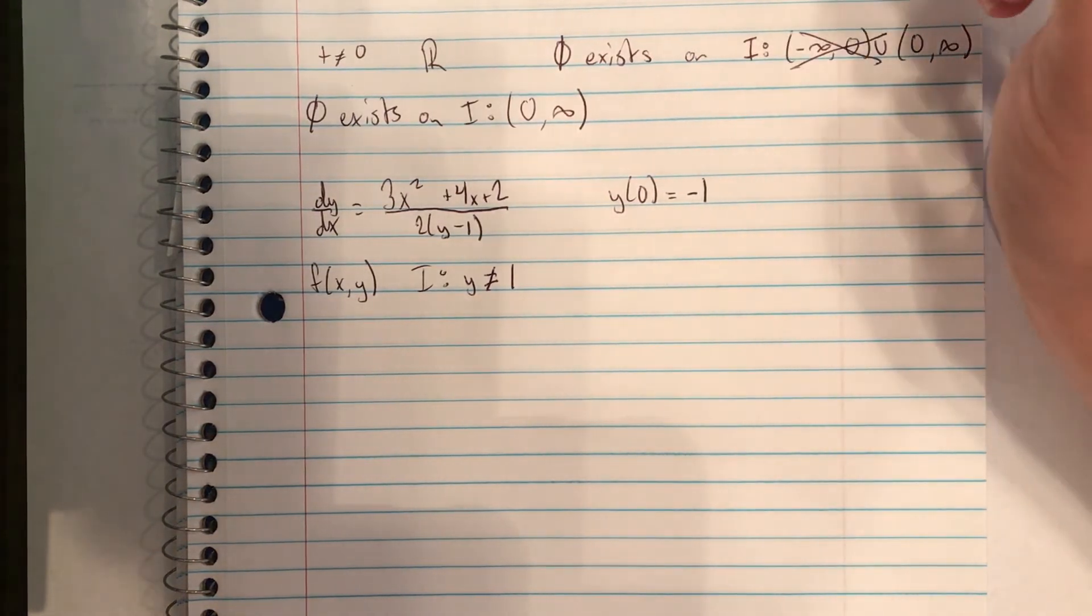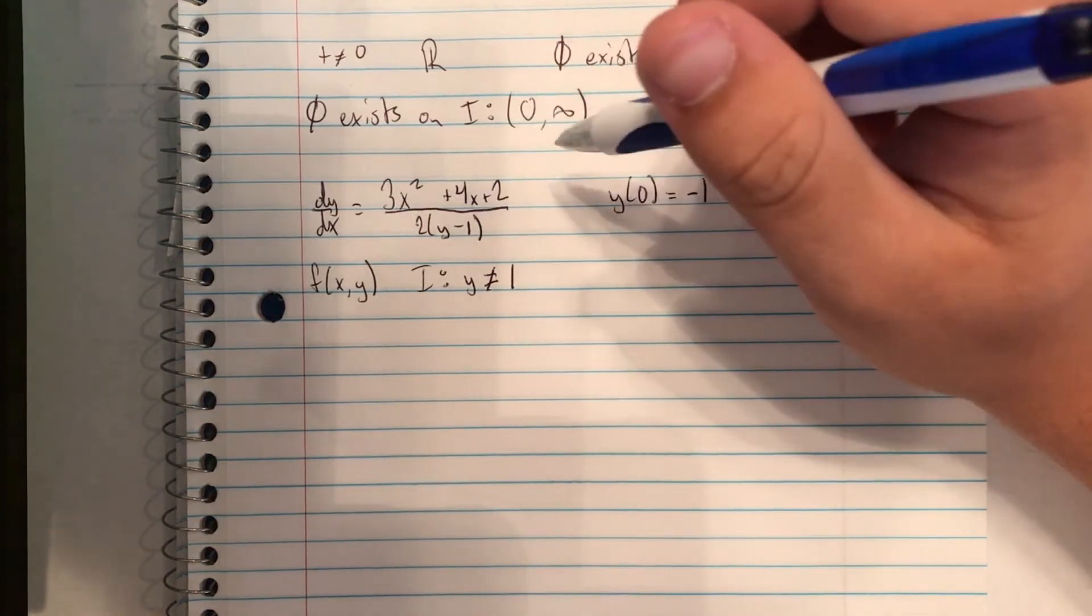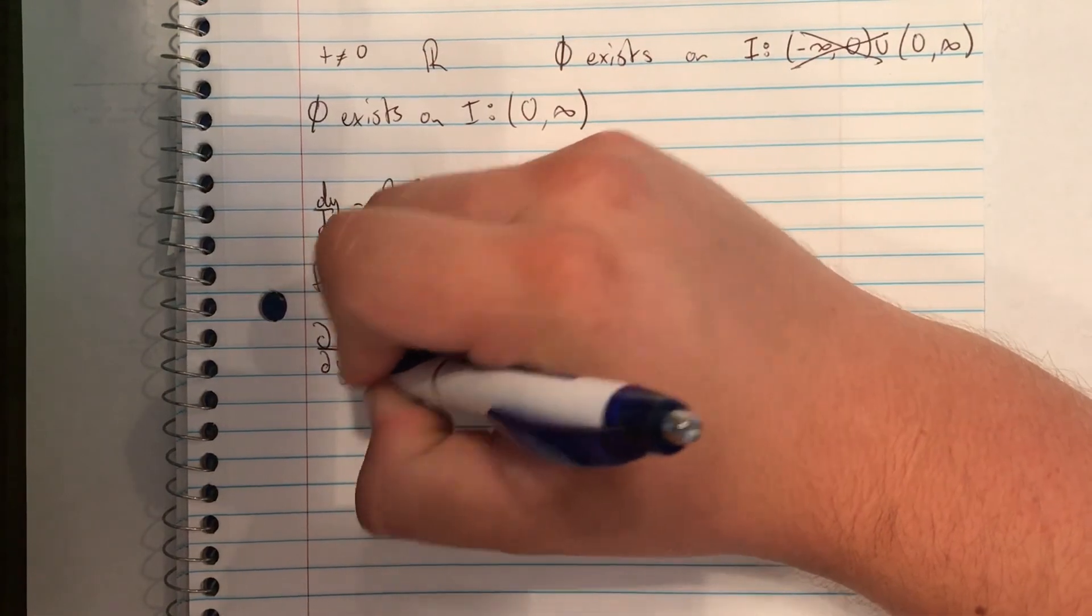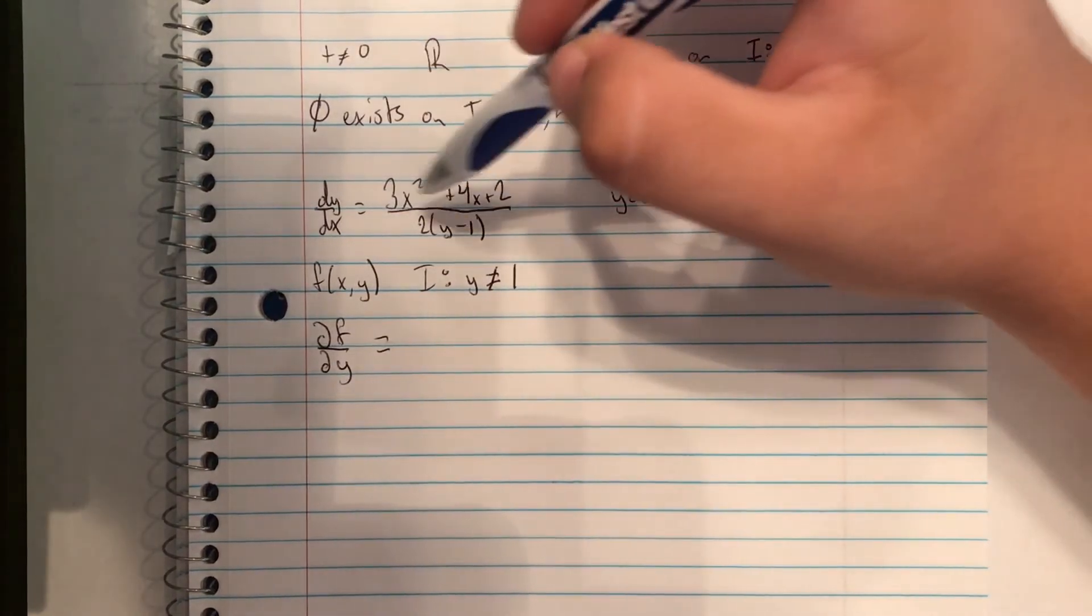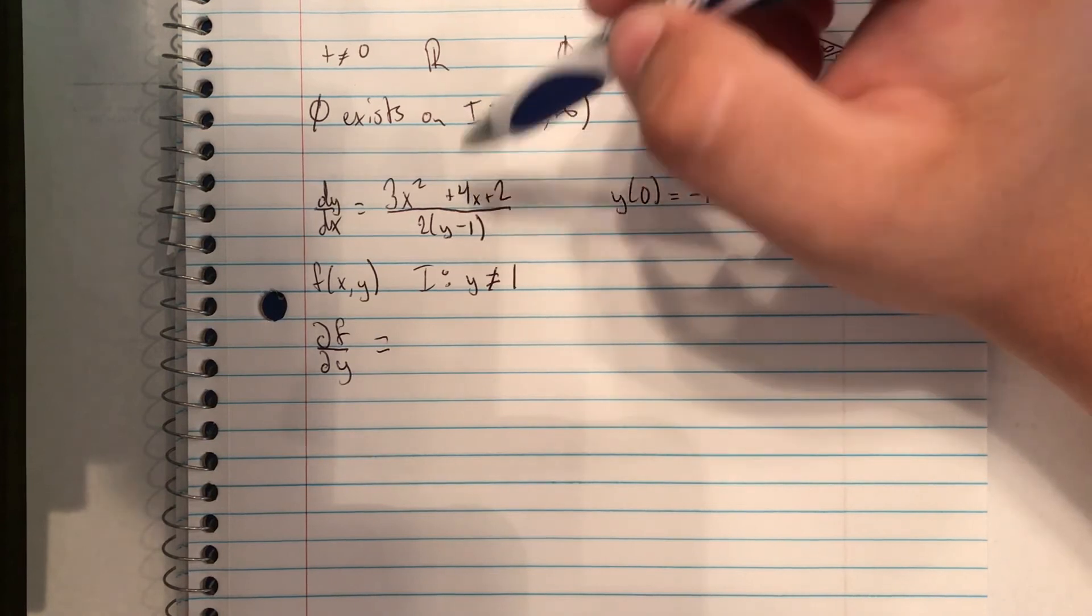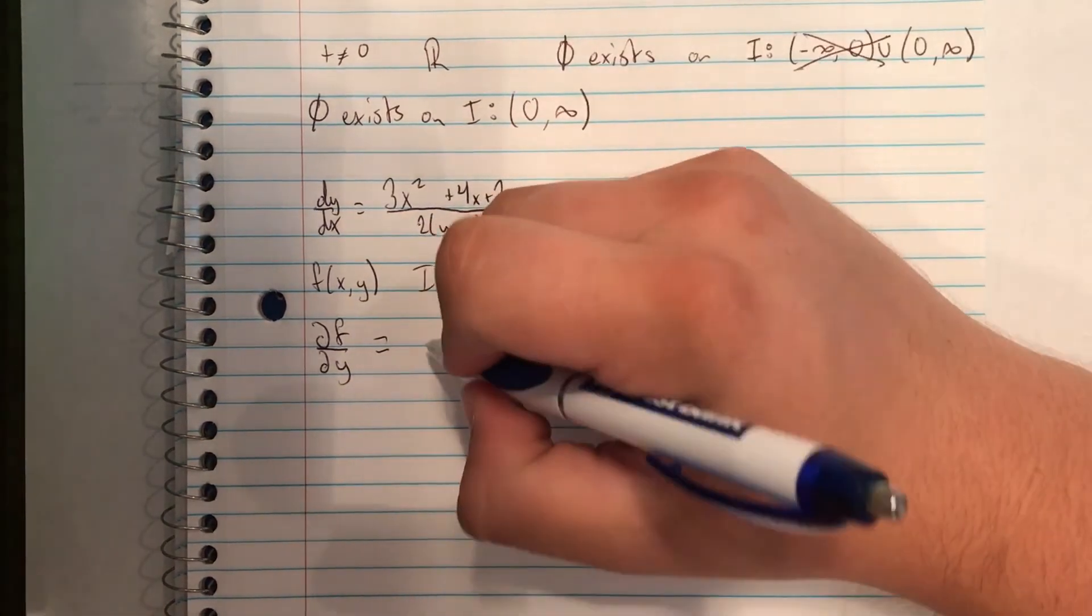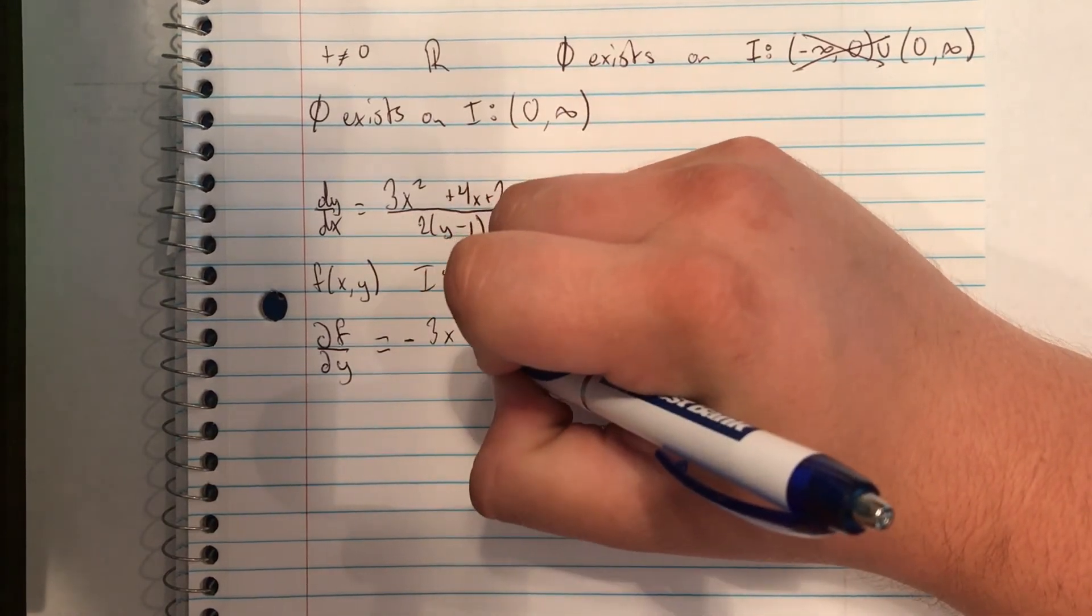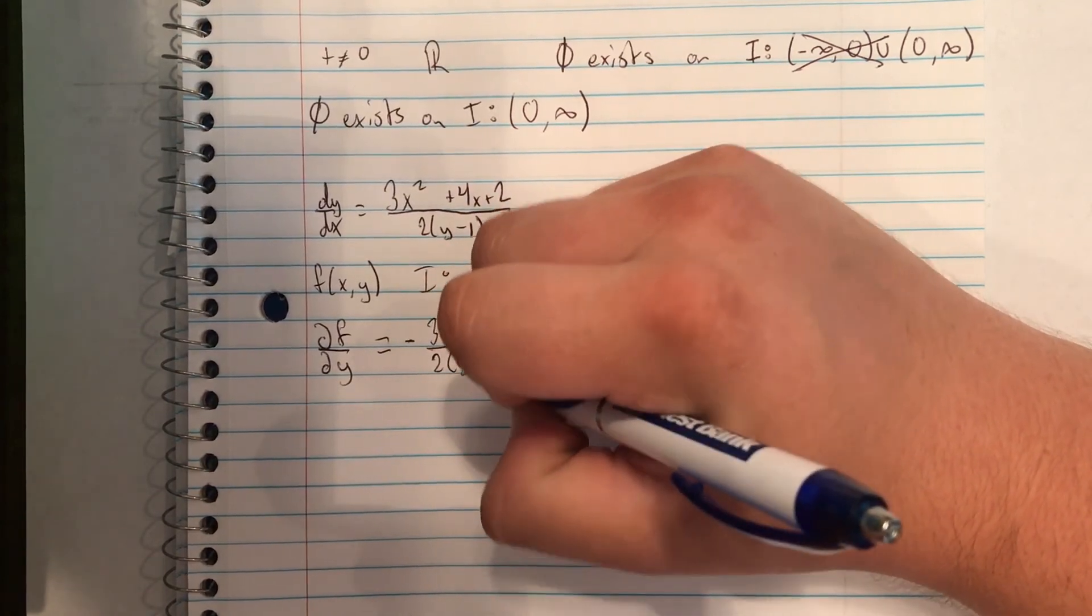So next up, we'll take the partial derivative of this function with respect to y. So we have that, and that is going to be equal to... the partial derivative, essentially, of 1/(2(y - 1)). This will go to -(3x² + 4x + 2)/(2y - 1)².